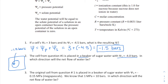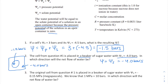Since it's in a beaker, we can assume it's an open container. According to the formula sheet, in an open container the pressure potential is zero, so the water potential equals the solute potential for the solution — which is negative 4 bars. The cell is negative 1.5 bars and the solution is negative 4 bars.